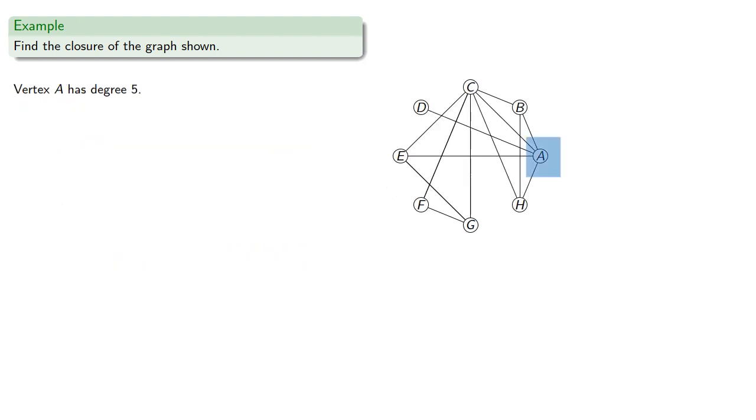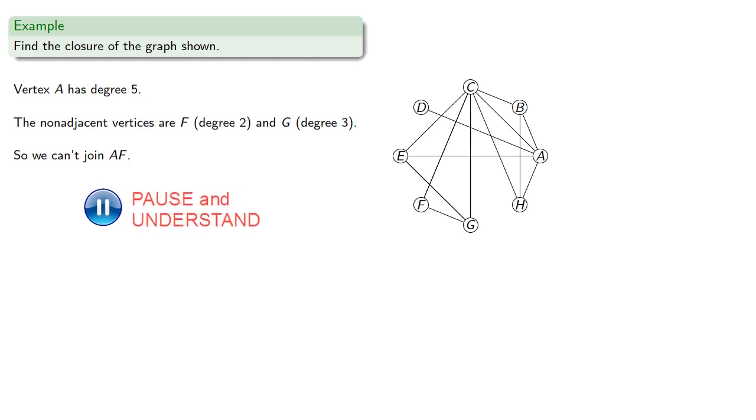Vertex A has degree 5. The non-adjacent vertices are F and G. So we can't join AF because the sum of the degrees won't be 8. But we can join AG, so let's do that.